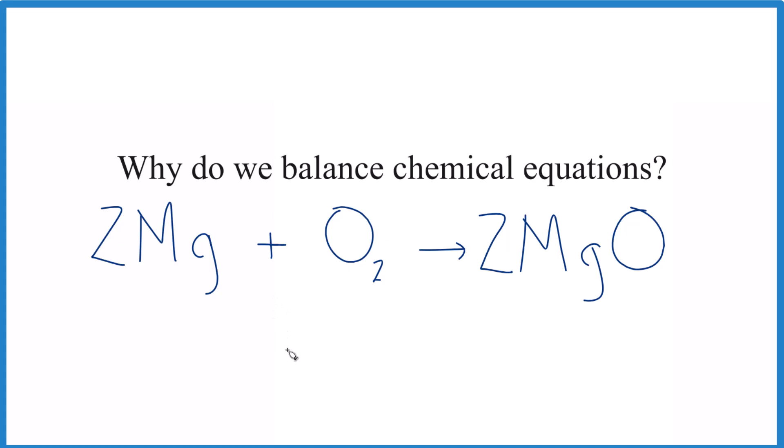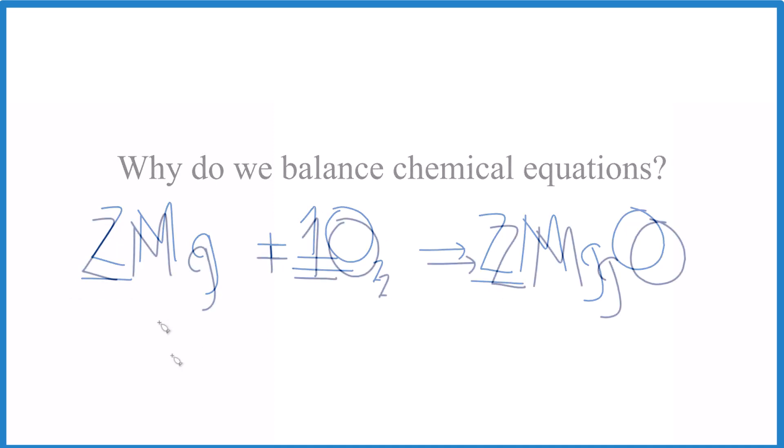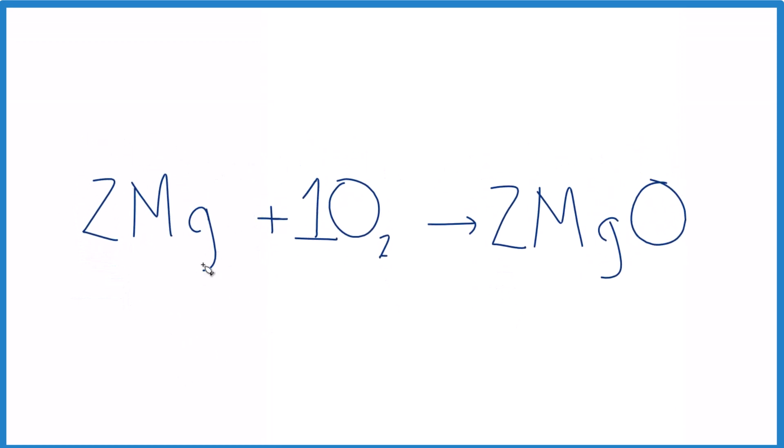These numbers - two (it's not written but it's there), one, and two - they are the coefficients but they're also the ratio between the substances. Here for every two magnesiums you have one oxygen molecule and you get two magnesium oxide formula units: 2 to 1 to 2.